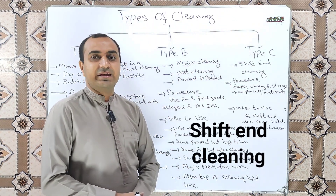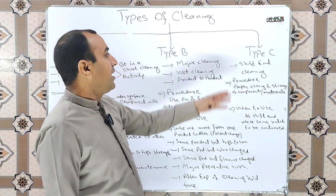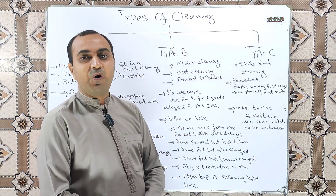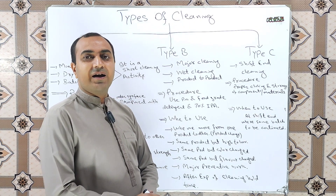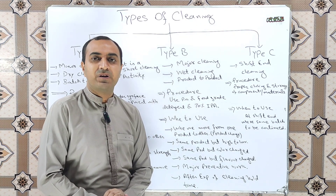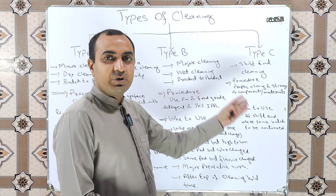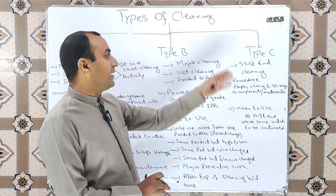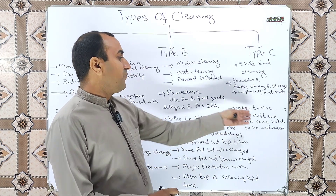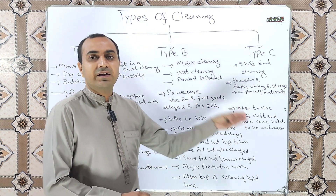Type C cleaning is also known as shift-end cleaning. Type C cleaning is performed by removing all components and materials from the line and ensuring proper storage and closing of these components and materials. Type C cleaning is performed in the situation where the same batch is to be continued in the next shift.